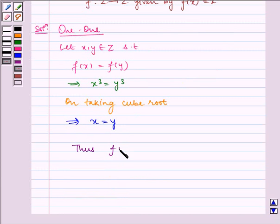Thus, f is one-one. Now let us check for onto.